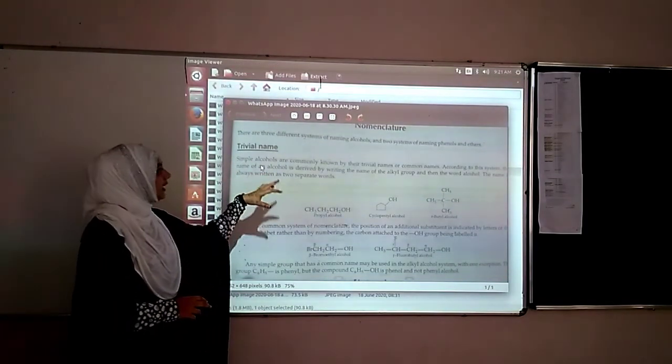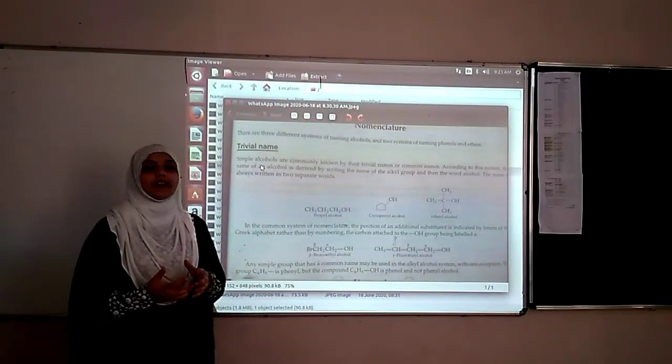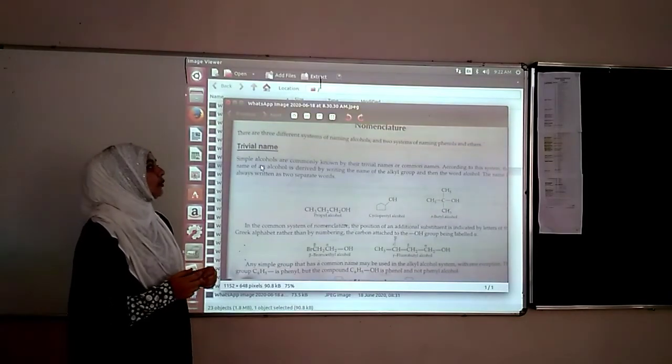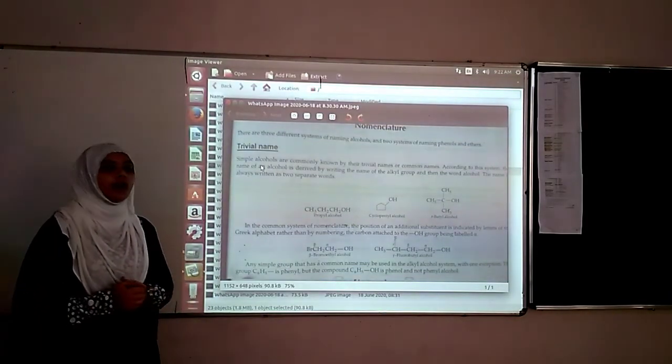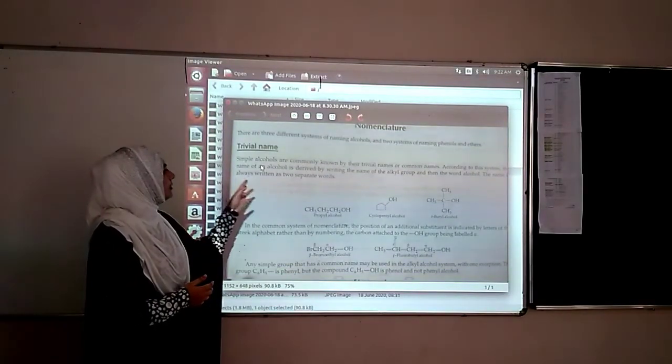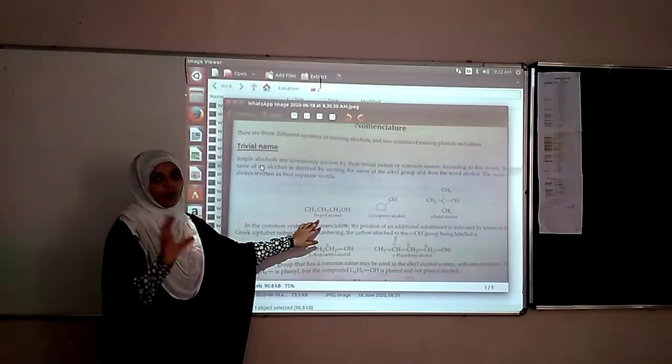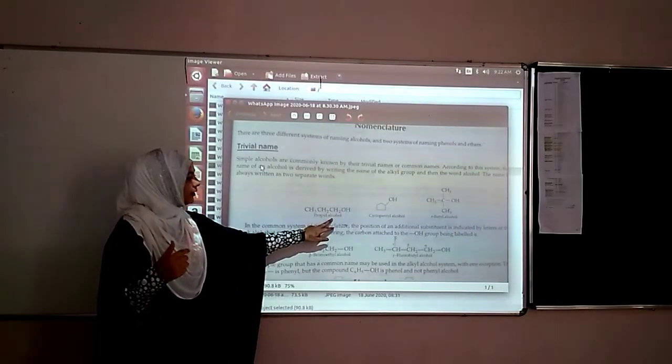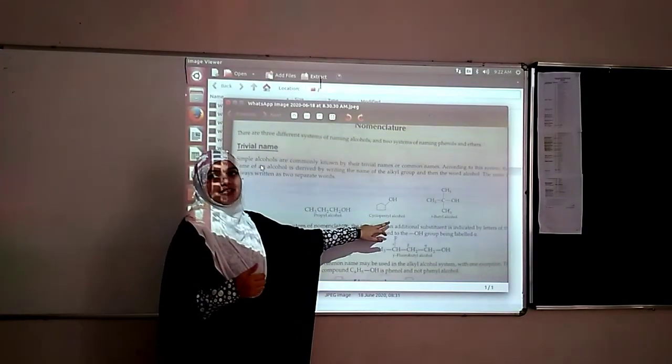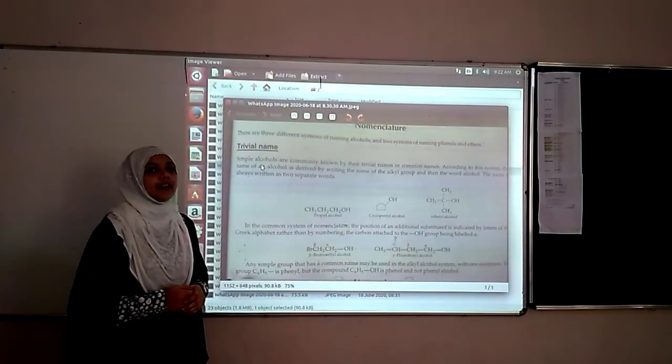Here's what the trivial names are. Simple alcohol forms are given with the trivial names also, and we can call it the common name. According to the system, the name of the alcohol is derived by writing the name of the alkyl group and then the word alcohol. The name is always written as two separate words. For example: propyl alcohol, allyl alcohol, cyclopentyl alcohol. Similarly, tertiary butyl alcohol. These are the naming conventions.